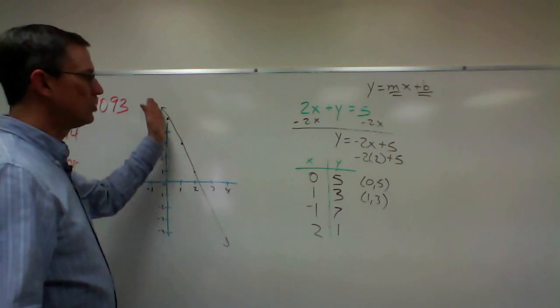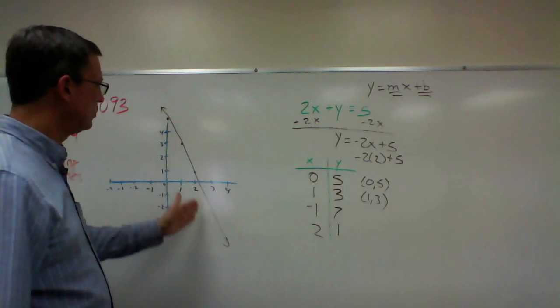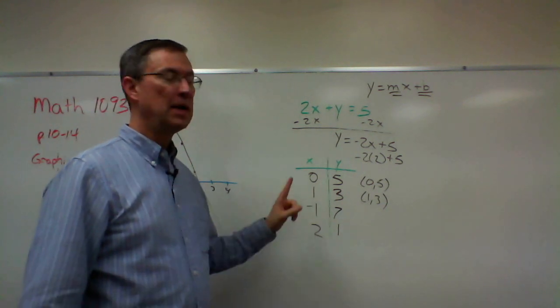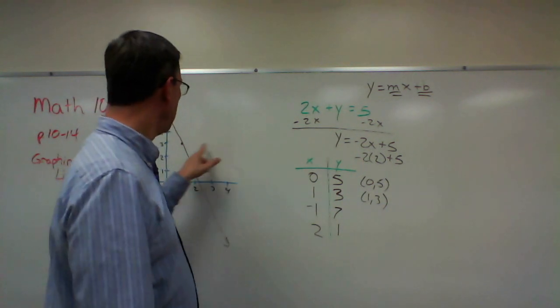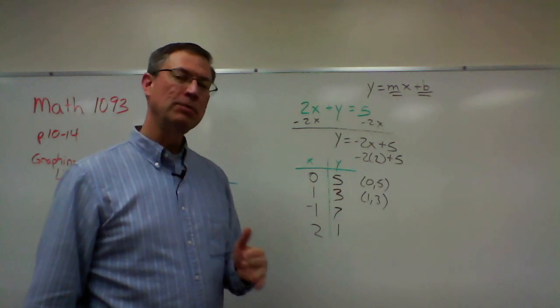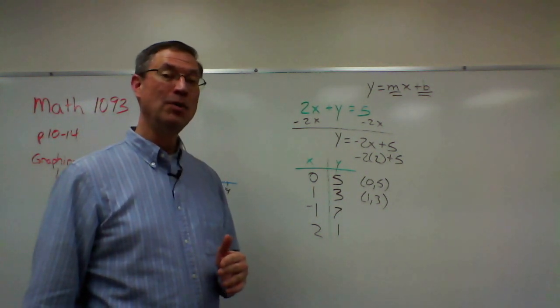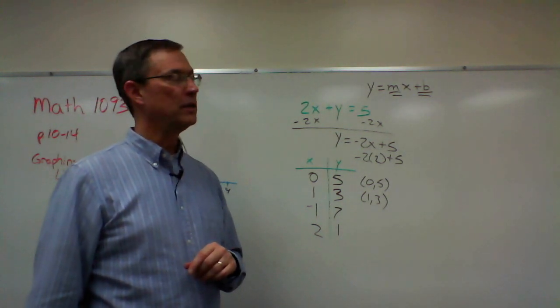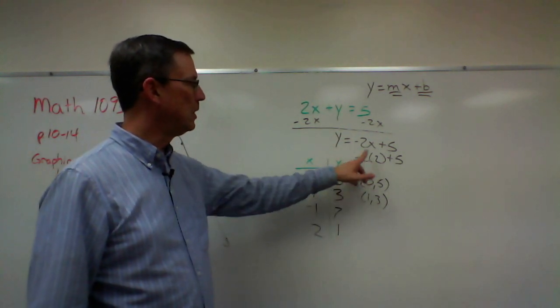Make sure you use a ruler, a straight edge to connect your dots. If you do three or four of these and one of them is way off and it's not lined up, you did something wrong. The one that's not lined up is probably the one that's wrong. So go back and check your math again and see if you made a mistake.